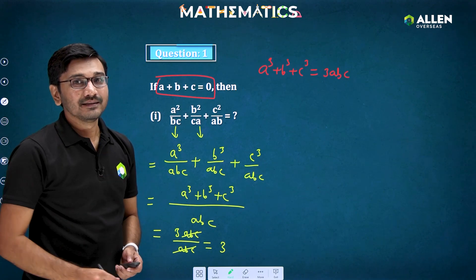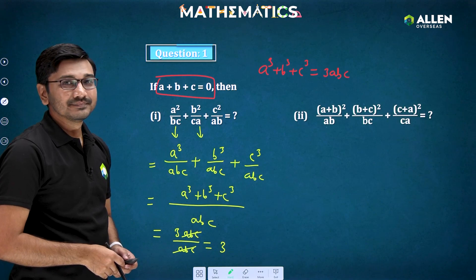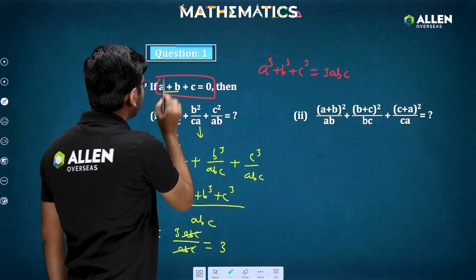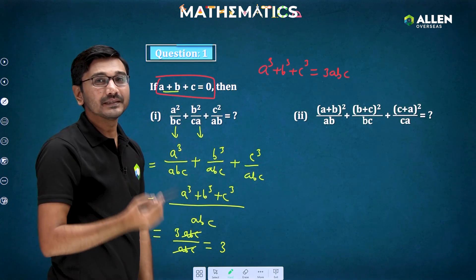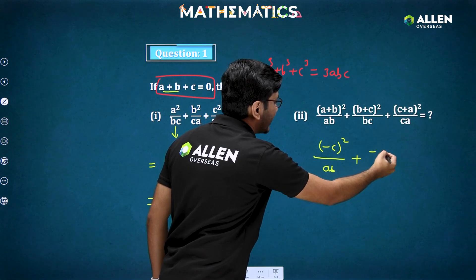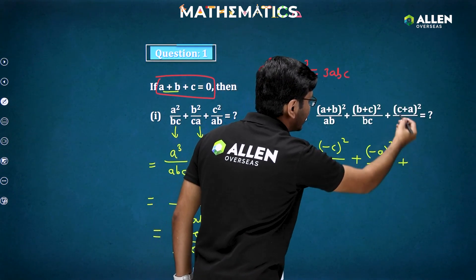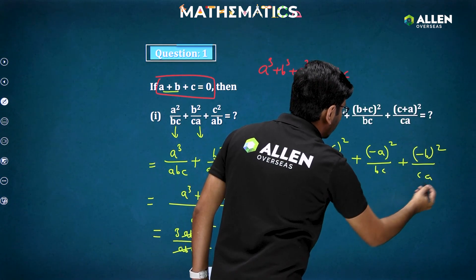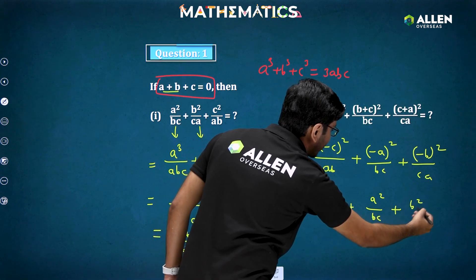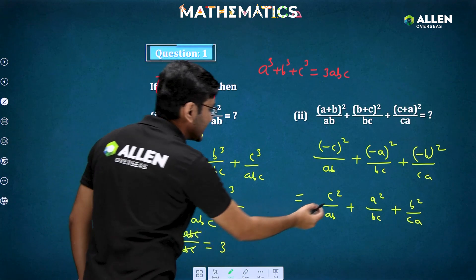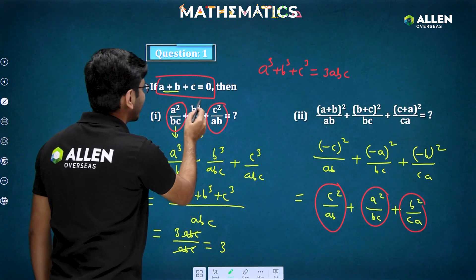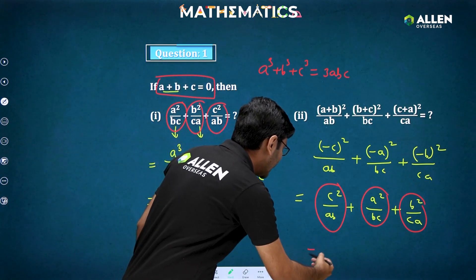If you understood that, give a try to the next question. Now I'll solve: (a+b)²/ab + (b+c)²/bc + (c+a)²/ca. Since a+b+c = 0, we have a+b = −c, b+c = −a, and c+a = −b. So the expression becomes c²/ab + a²/bc + b²/ca — which is exactly the same question as before! And the answer is again 3.